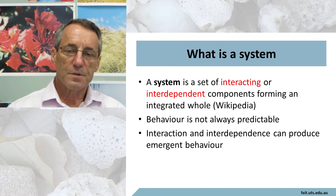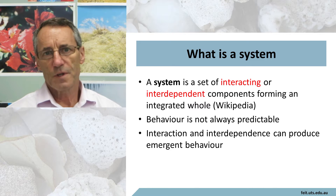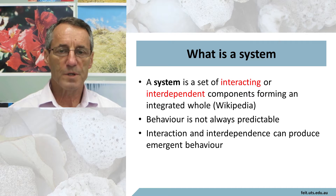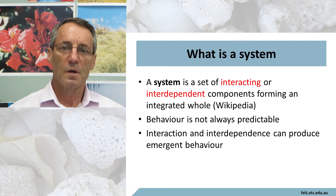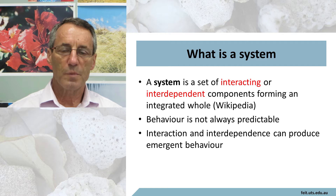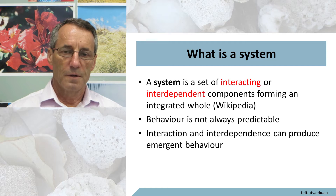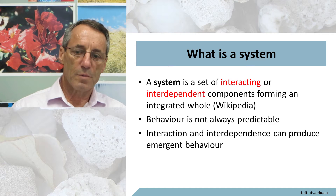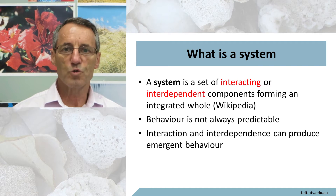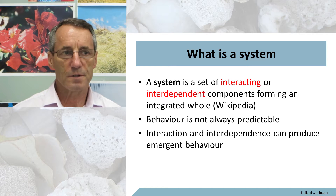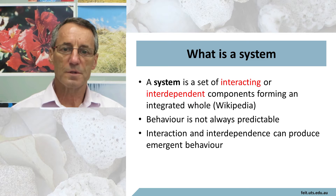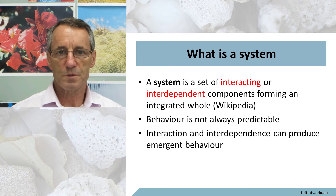First off, the question is: what is a system? It's a fairly loose concept — a lot of things are systems. The basic definition of a system is something that has a set of interacting and interdependent components. That's about as close as we can come to a definition. The expectation is that a system would actually do something — it's not just an arbitrary collection of things that coincide. There usually is some sort of a purpose to it.